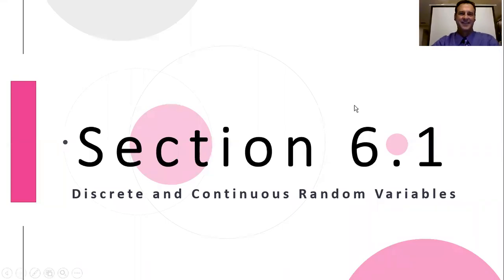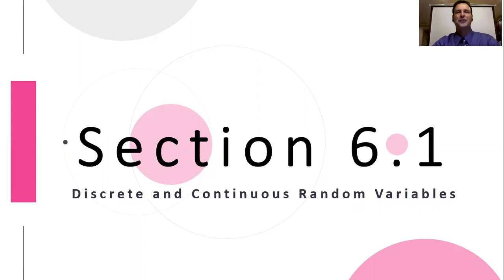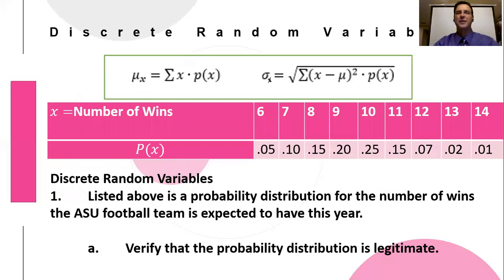Hello, AP Statistics. This is section 6.1: Discrete and Continuous Random Variables. You'll need paper and pencil, a graphing calculator, and from chapter two your normal distribution table — your z-table where if I give you a z-score you look it up and find the respective four-digit probability. If you don't have those handy, pause and go grab them.